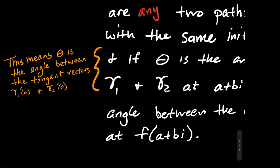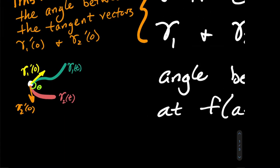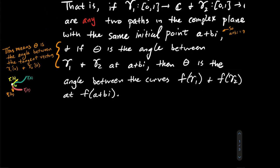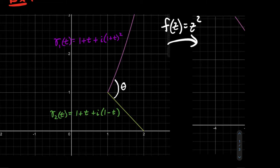Those are the two tangent vectors to the curves at the initial point — there's a picture illustrating this. The green and pink curves share the initial point a+bi (in white), and the angle between them is measured using the tangent vector gamma 1'(0) in yellow and gamma 2'(0) in orange, so theta is the angle between those two vectors. For a concrete example, in the z-plane: gamma 1 is part of a parabola parameterized as 1+t + i(1+t)², and gamma 2 is a line parameterized as 1+t + i(1−t).